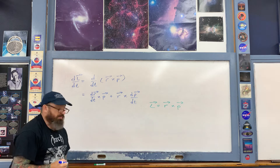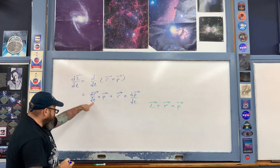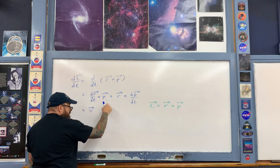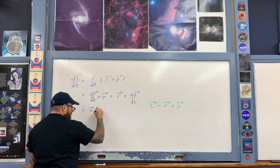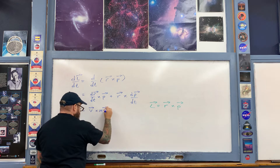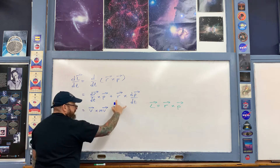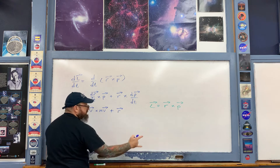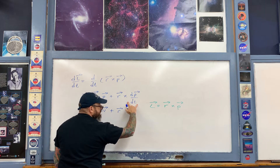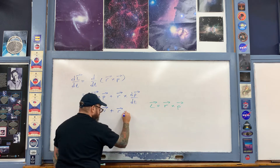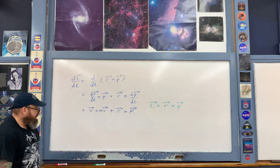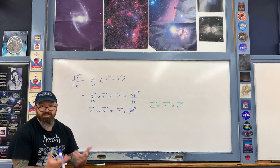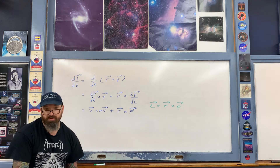Here, dr/dt is velocity v. Writing p as mass times velocity, the first term becomes v cross mv. The cross product between a vector and itself is zero because there is a zero degree angle between a vector and itself. So that first term drops out.